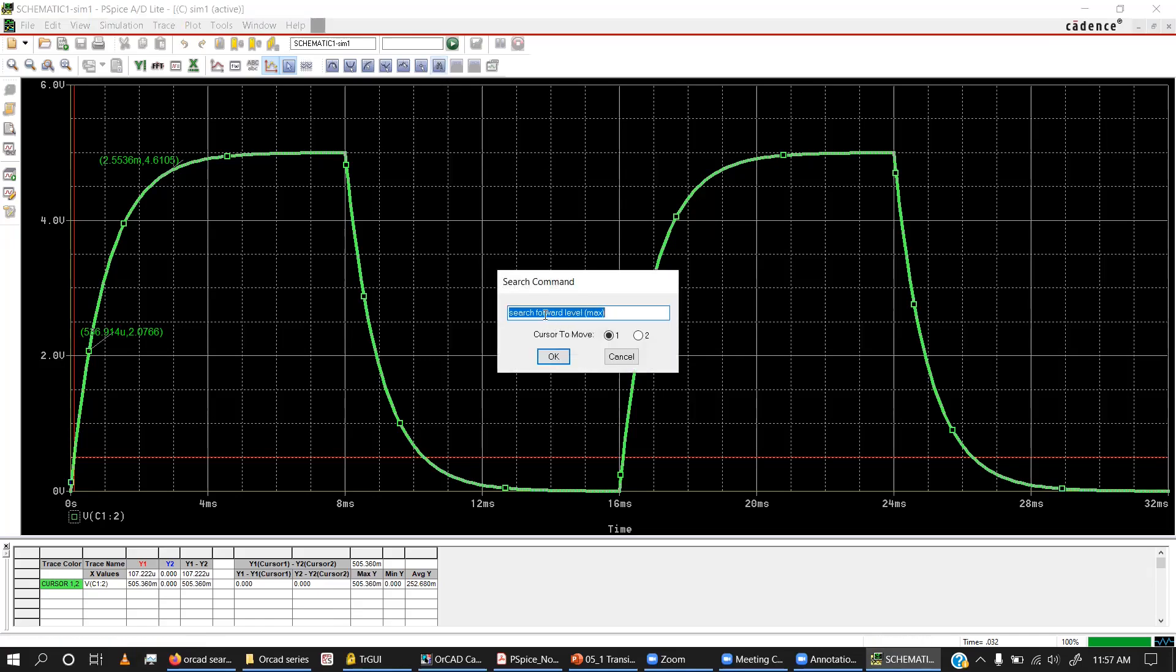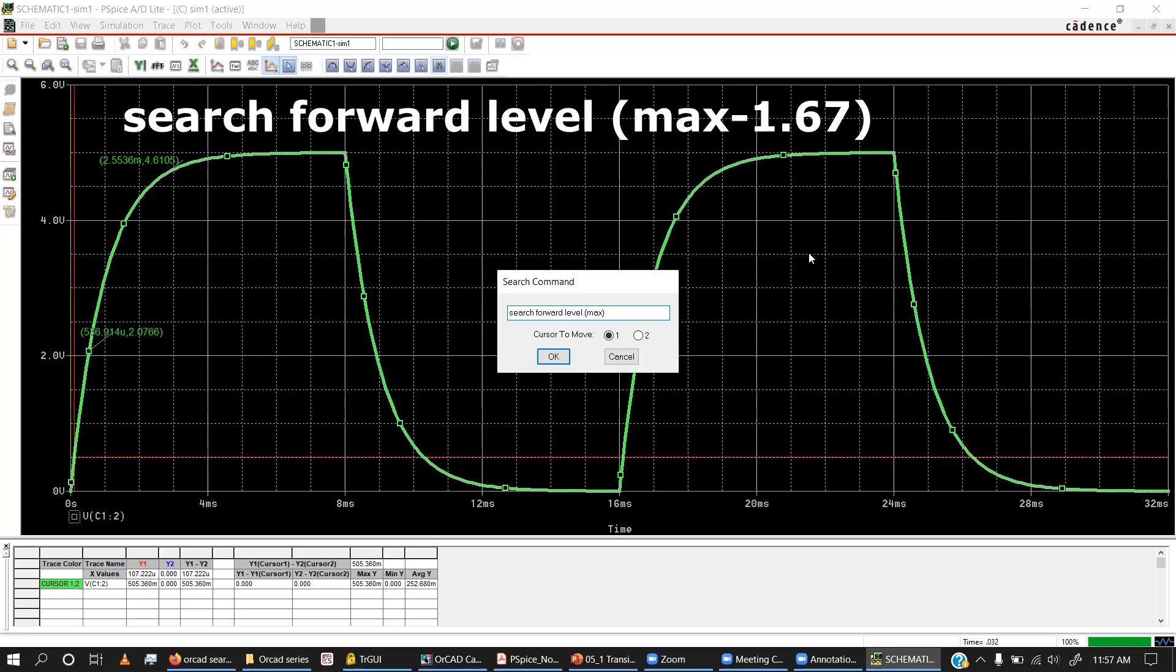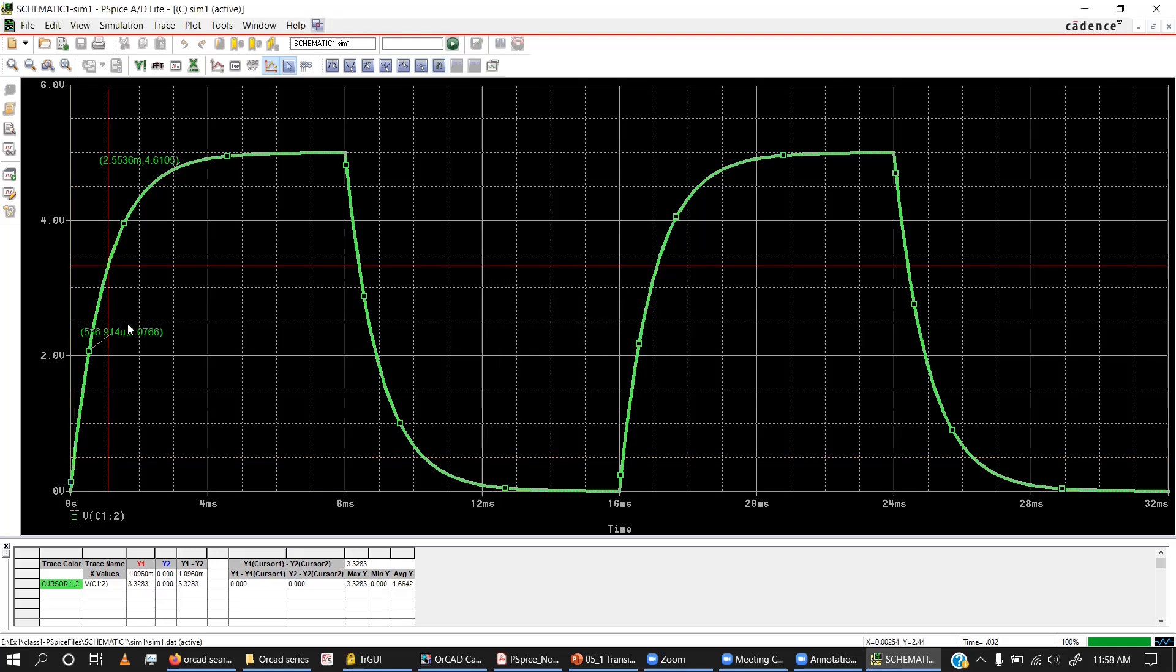I'm going to use a command, the search command, search forward. That means I'm going to move my cursor towards the right. Level is the y-axis level. Max is the maximum value, so in this case it's basically 5 volts. Minus 1.67, so that's the level I want to move it to. Once I move my cursor from y-axis maximum minus 1.67, I know for sure if I measure the time, that's my time constant.